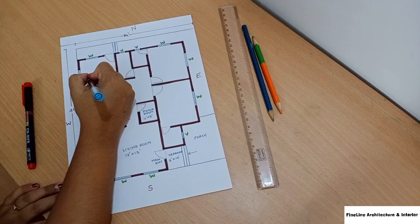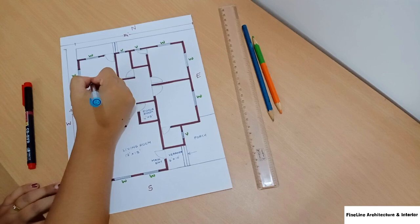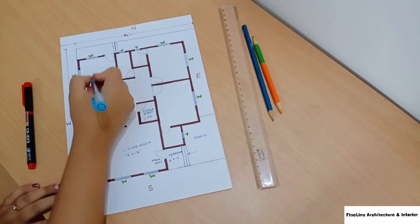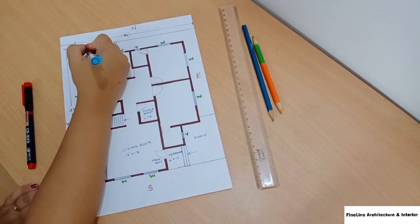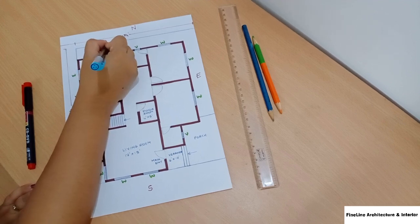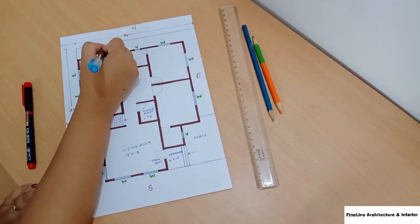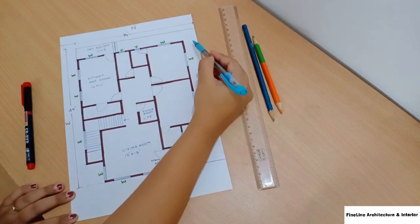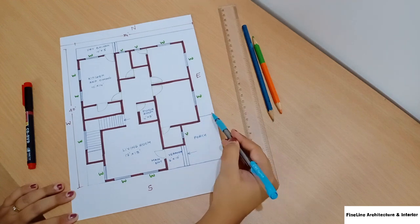Next is the kitchen and dining room. This area is 10 feet by 4 feet. The kitchen is attached to the dry balcony, which is 10 feet by 3 feet. From the dry balcony, you will get a garden space from outside, which directly connects to the entrance.